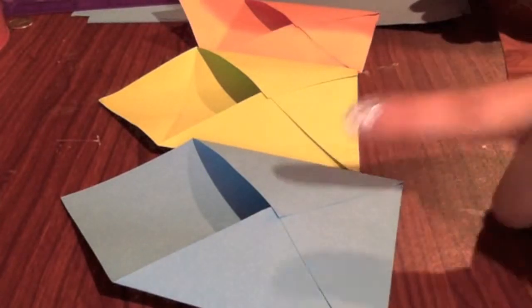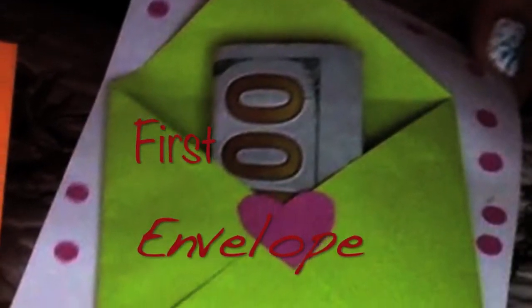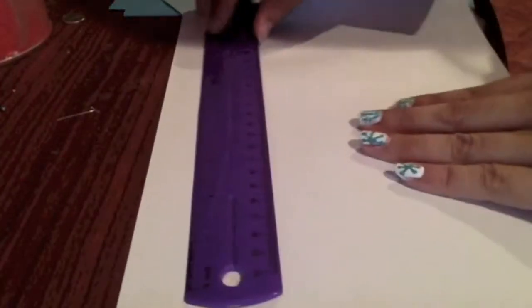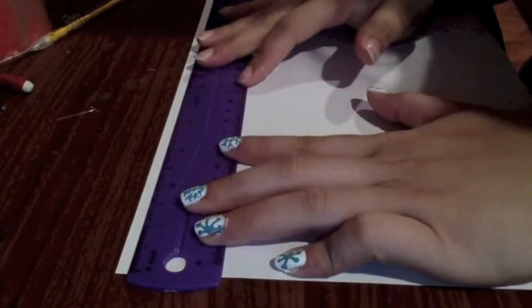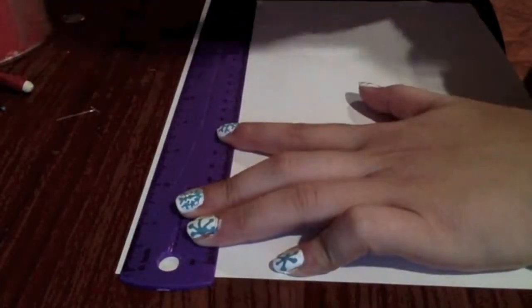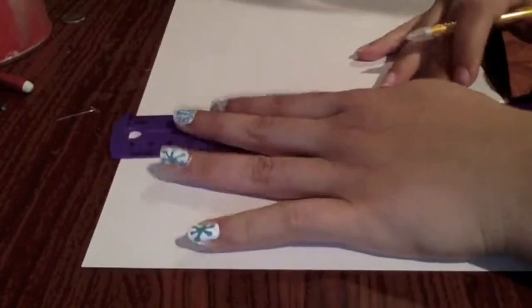This is the first design I'm going to show you. For this design, the extra materials you will need are a punch hole, a stamp, and a string. We're going to measure a rectangle measuring 6.5 inches by 4.5 inches.